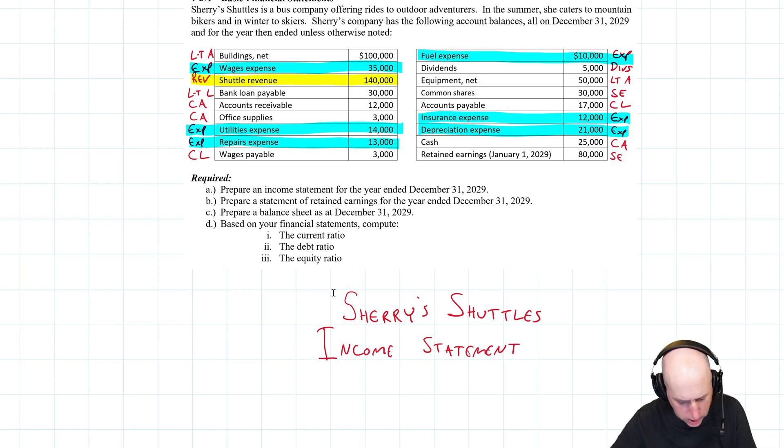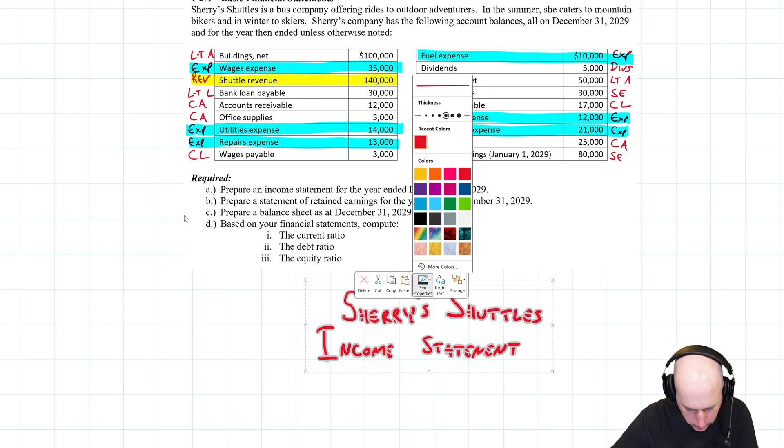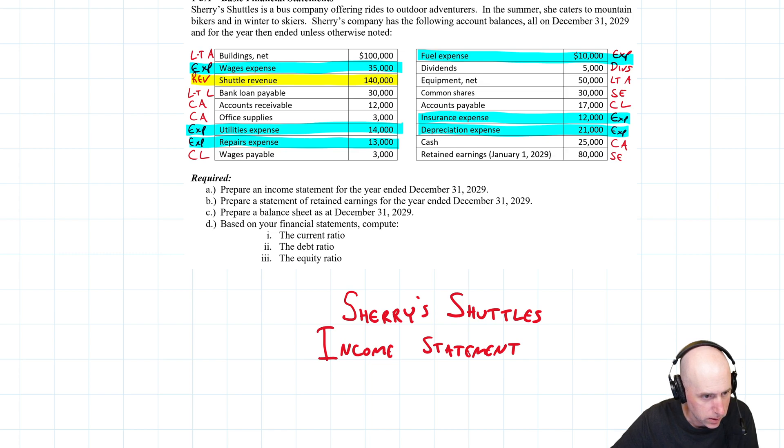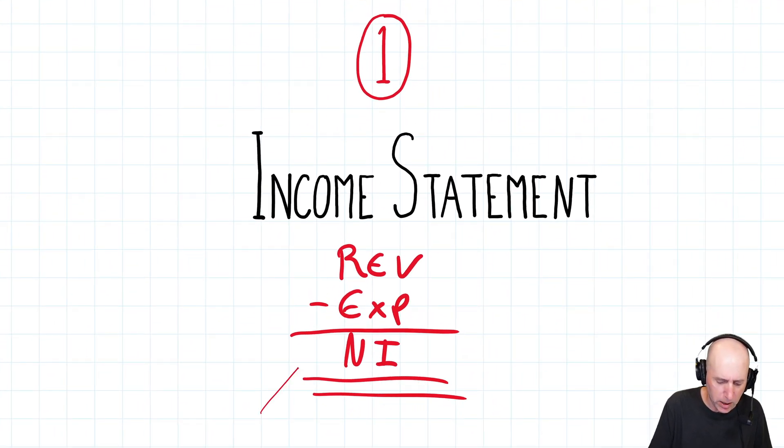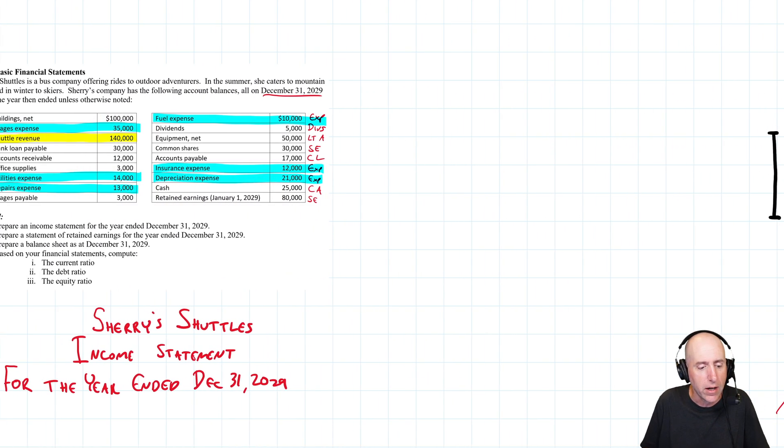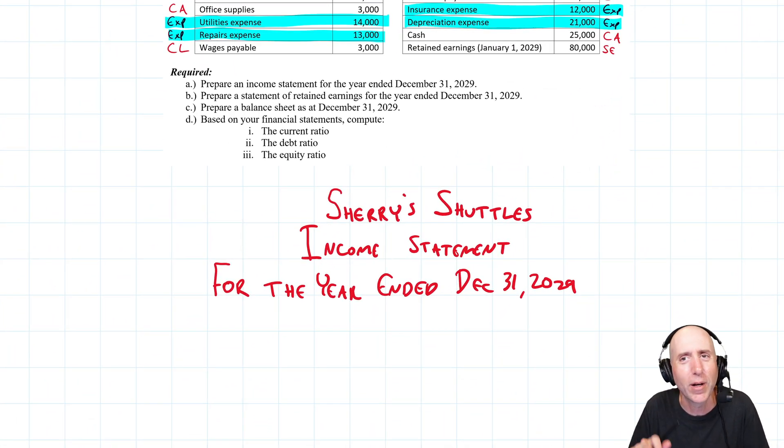When we're asked to prepare any financial statement, including this one, we need a three line title, three lines. The first line is the name of the company. So the first line is going to be Sherry's Shuttles. The second line is the name of the financial statement we're asked to prepare. We are asked to prepare an income statement. And so name of the company, name of the financial statement. The third line down is the date. And so this is a December 31st, 2029 income statement. For income statement and statement of retained earnings, we have to actually give a time period. So I'll show you what to do and then I'll explain why. This is for the year ended and then the date, for the year ended. And the date is December 31st, 2029.